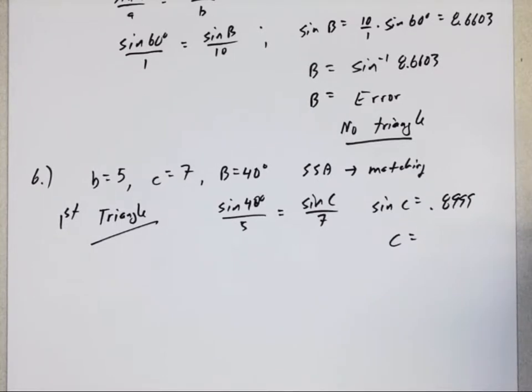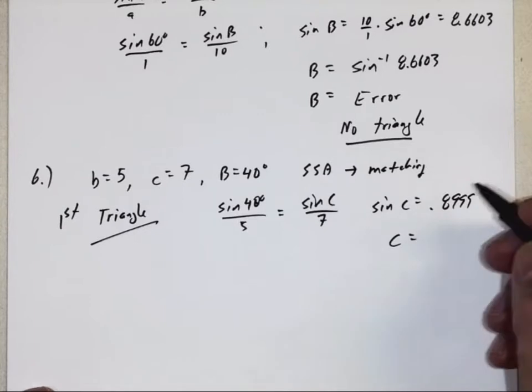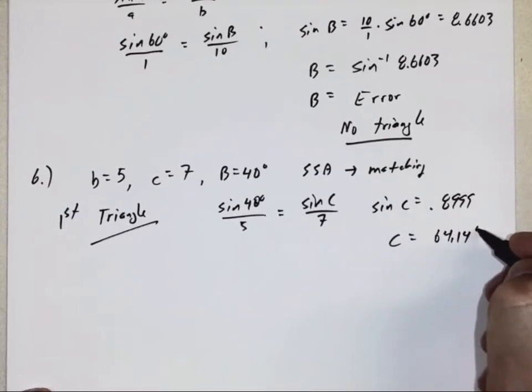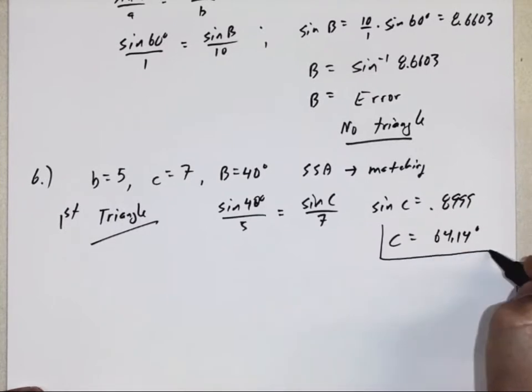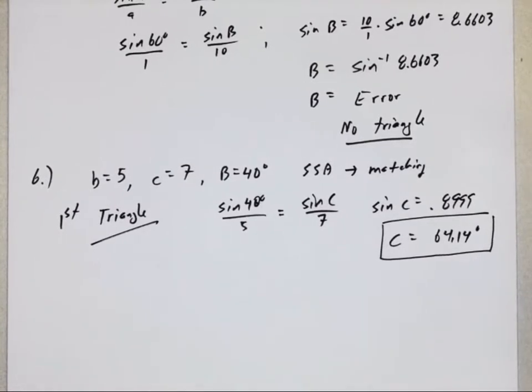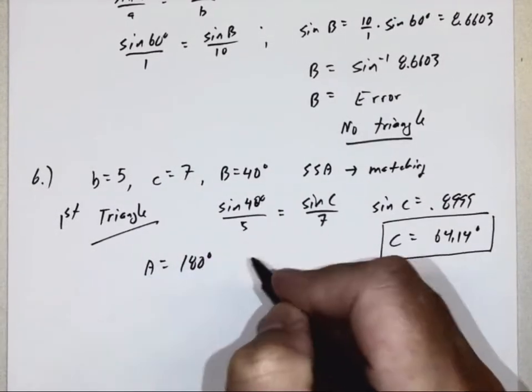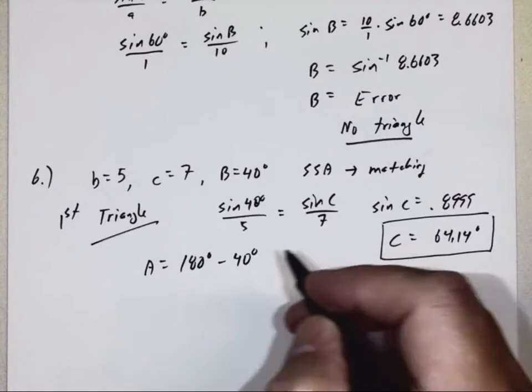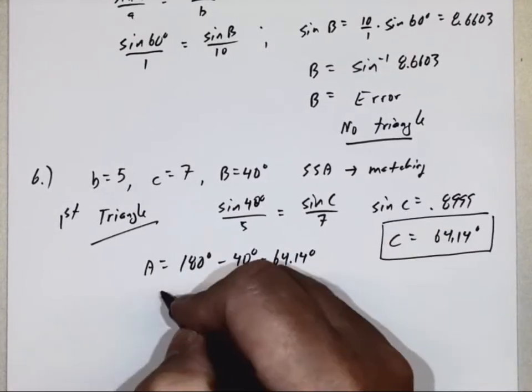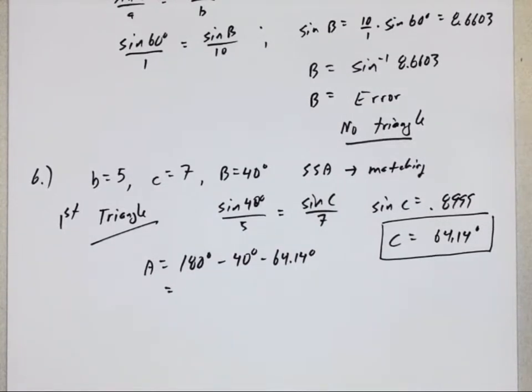Oh, I'm sorry, it says two decimal places, sorry about that. Now once again, I'm going to put this in a box because when I go to see if there's a second triangle, that's going to be my starting off place. So I'll try to put that in a box. Let's go and finish this first triangle. I know angle B, I know angle C. That means angle A must be 180 degrees minus angle B minus angle C. So 180 subtract 40 subtract 64.14, let's go for 75.86 degrees.